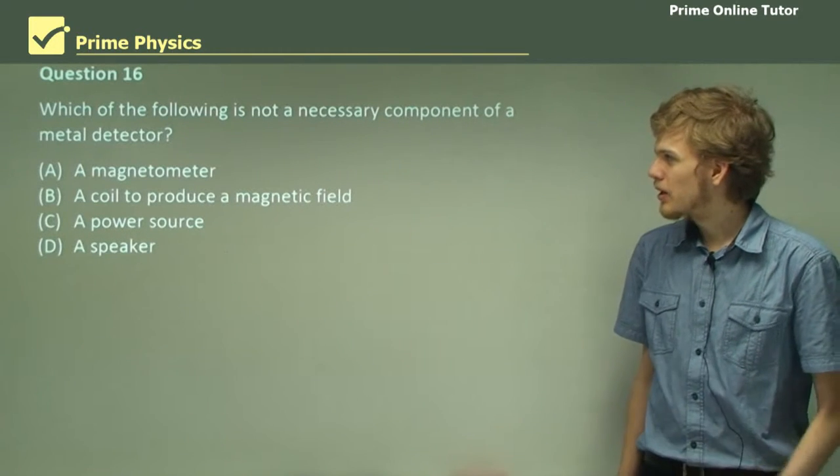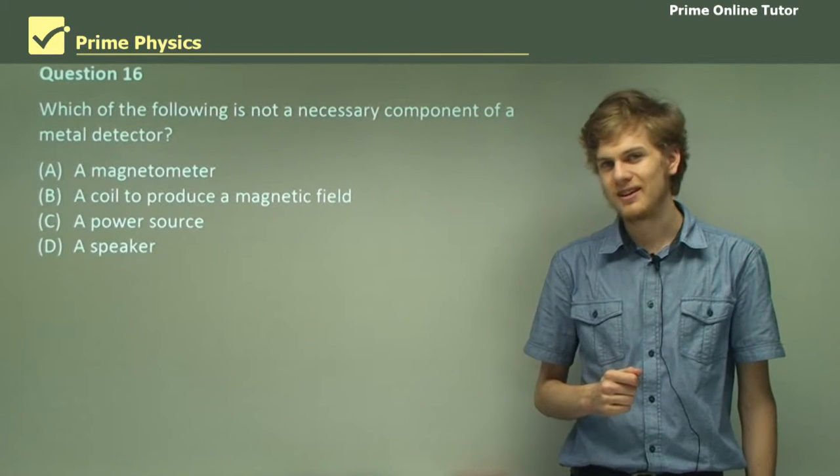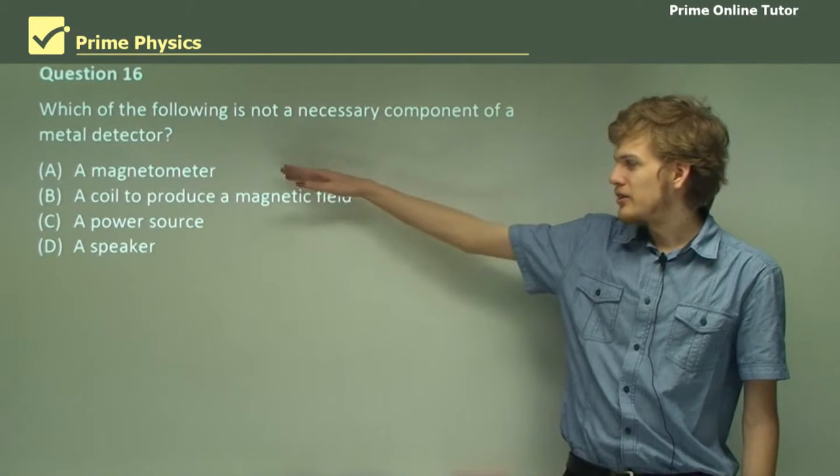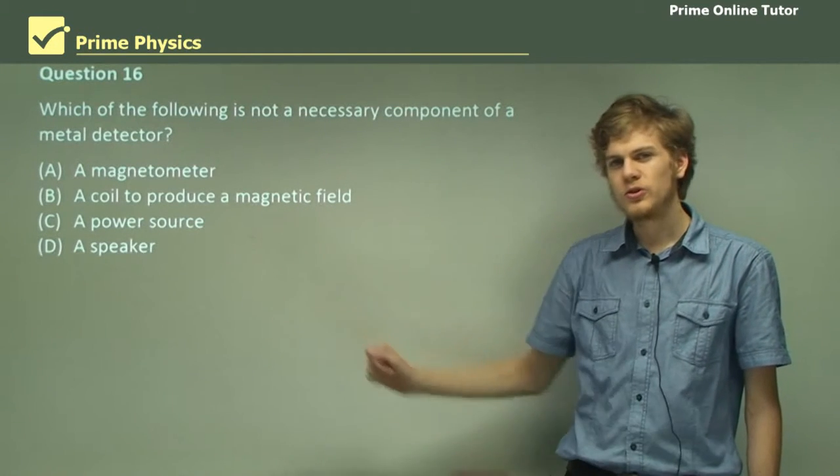Question 16. Which of the following is not a necessary component of a metal detector? Is it a magnetometer, a coil to produce a magnetic field, a power source, or a speaker?